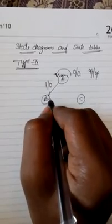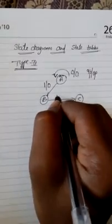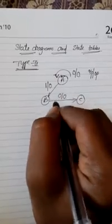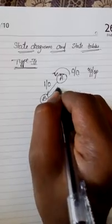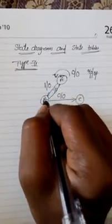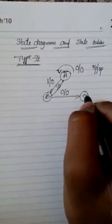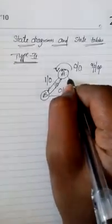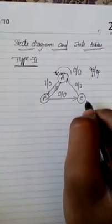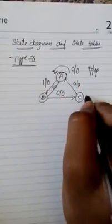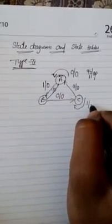At state B, when we give input as 0, the output is 0 and the state changes from B to C. When the input is 1, the output is 0 and the state changes from B to A. At state C, when we give input as 0, the output is 0 and the state changes from C to A. When the input is 1, the output is 1 and the state remains at C.